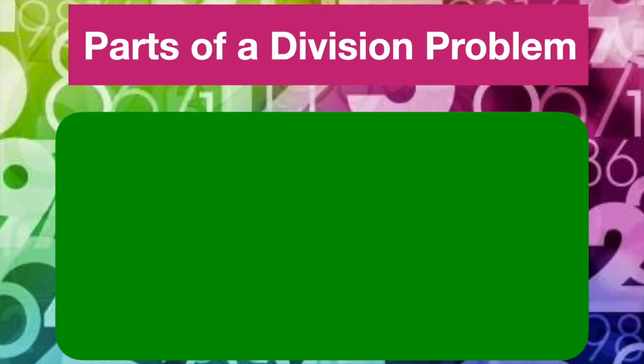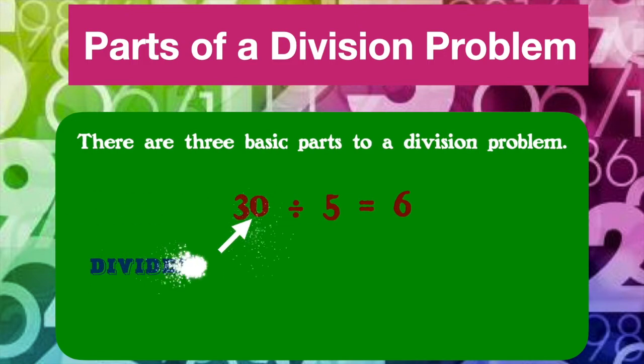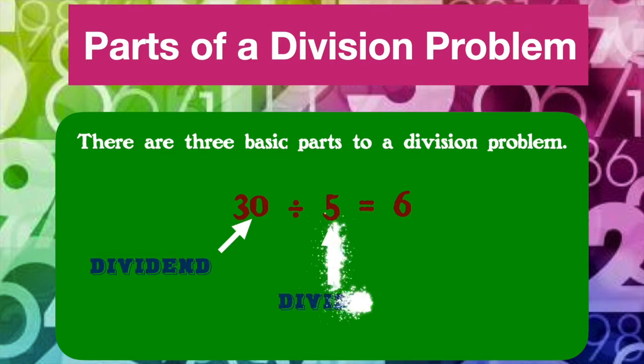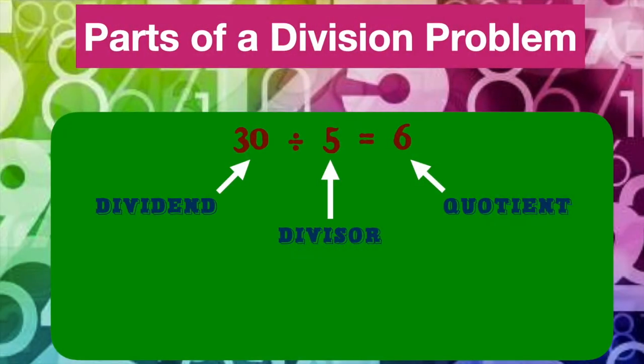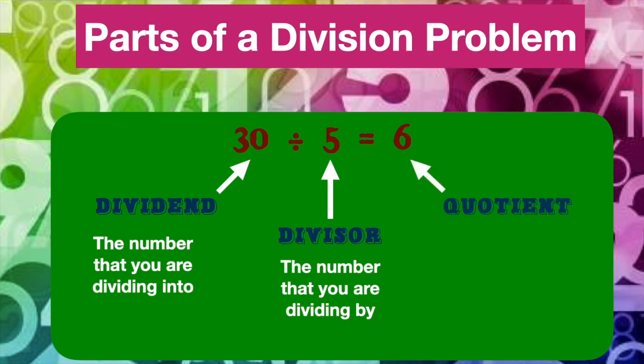In a division problem, there are three basic parts. They are the dividend, the divisor, and the quotient. Let's take a look at their definitions. The dividend, that is the number that you are dividing into. The divisor, that is the number that you are dividing by. The quotient, that is the result obtained.